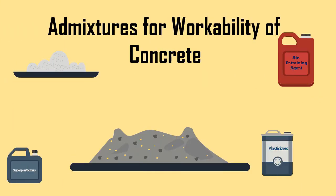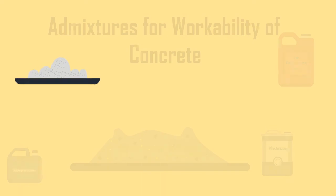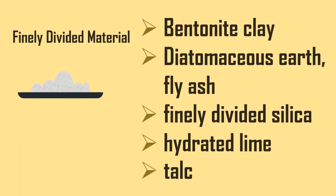Some of the common admixtures used for improving the workability of concrete are finely divided materials such as bentonite clay, diatomaceous earth, fly ash, finely divided silica, hydrated lime, and talc.